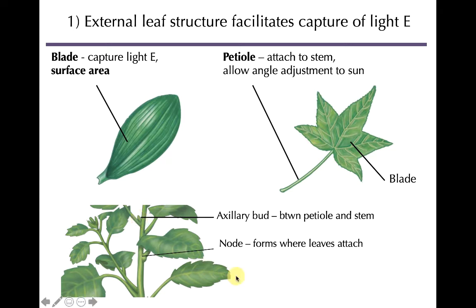Between the leaf and the stem is the axillary bud, which indicates that a leaf is attached there — wherever a leaf is attached to a stem, you should always see an axillary bud. Sometimes they're very small and hard to see on real plants, but it should be there. The axillary bud is where new branches, flowers, and thorns all grow from.